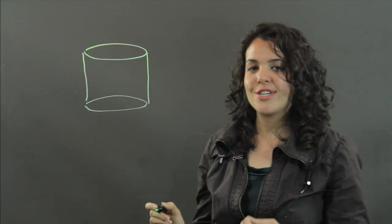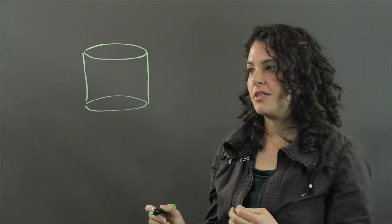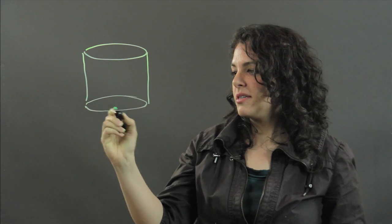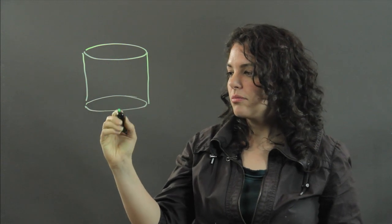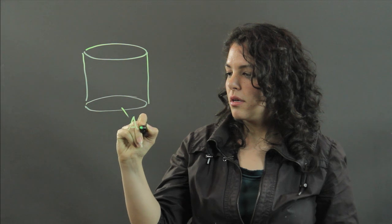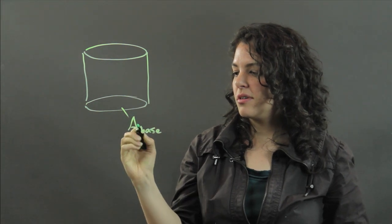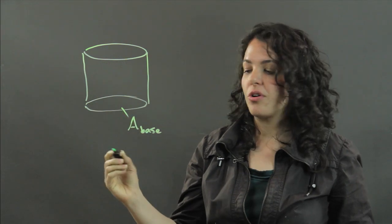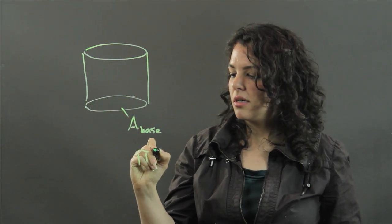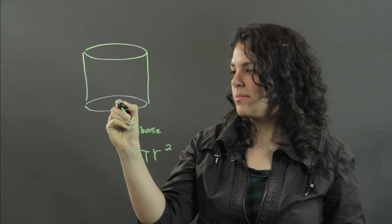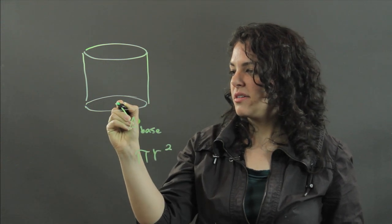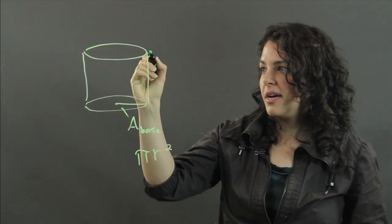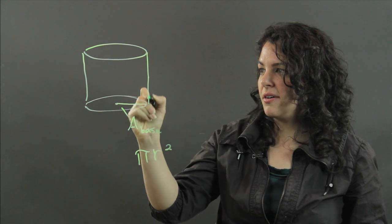The equation for the volume of a cylinder is the area of the base, which can be found as basically the area of a circle, which is pi r squared, r being the radius of the base. And then we multiply it by the height of the pot.